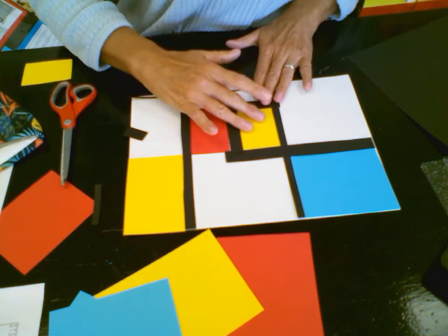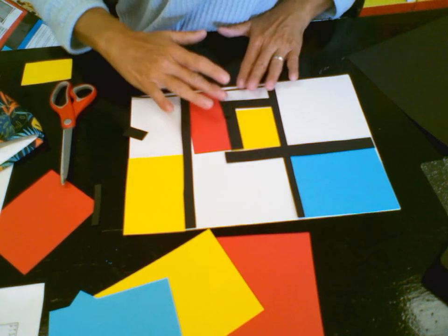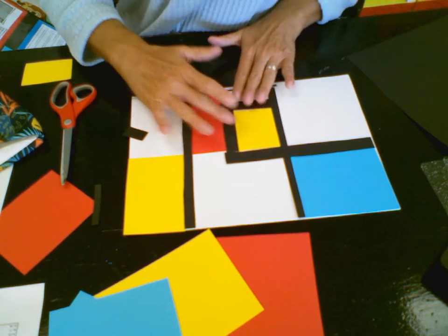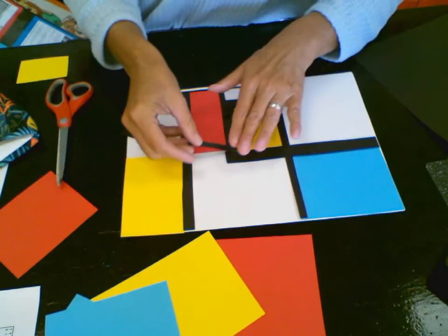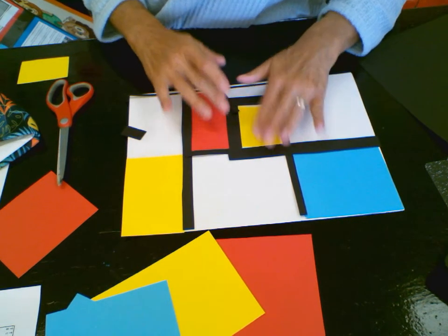But again, all of your black strips should be going either vertically or horizontally, not diagonally, and you want to make sure all the strips of color are kind of boxed in.